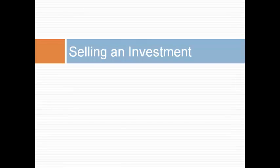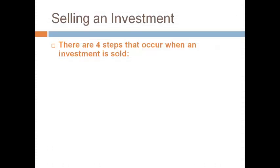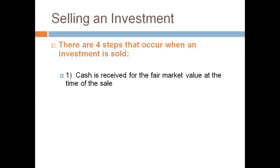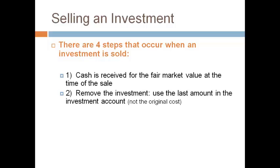This concludes our discussion on the equity method. We will now talk about how to record the sale of an investment. There are four steps that must be recorded when selling an investment. First, record the receipt of cash with a debit. Second, remove the current balance in the investment account with a credit — do not use the original cost unless the investment is reported under the cost method; remove the current adjusted balance.